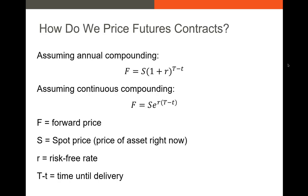So how do we actually price futures contracts? There's a very straightforward formula for most futures and forward contracts that looks a lot like the time value of money formula. The forward price — the price of some asset at some time in the future — is equal to the spot price today times the quantity (1 plus our risk-free rate, usually a T-bill in the U.S.) all to the power of time to maturity, or capital T minus lower t.